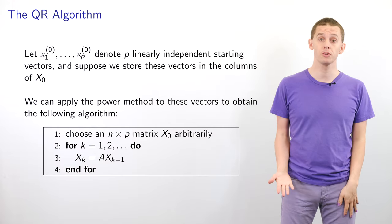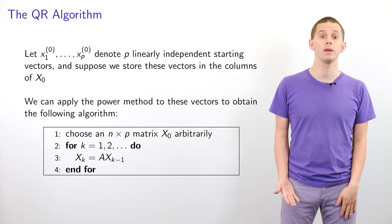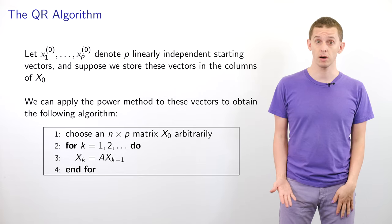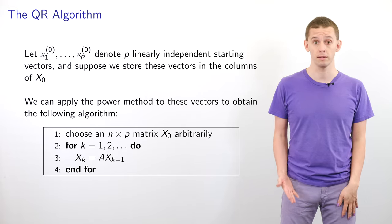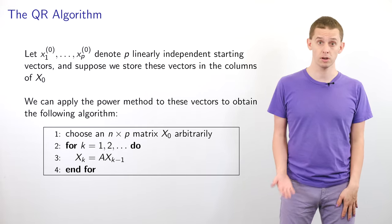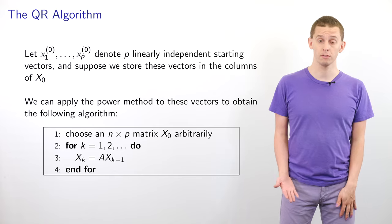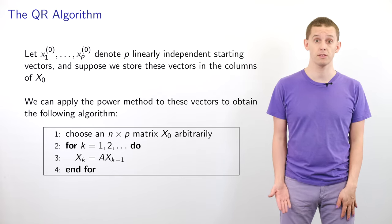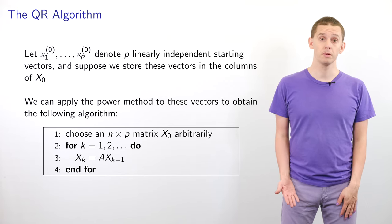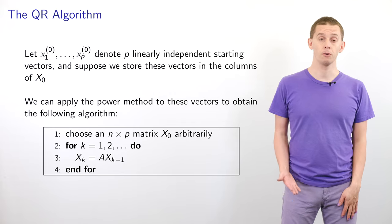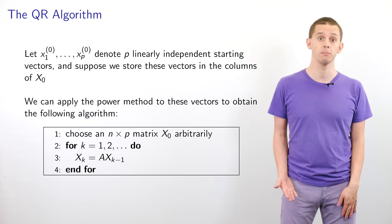Let A be a real symmetric n by n matrix. Let's choose x1 to xp to be p linearly independent random starting vectors for our power method. We'll use a superscript to indicate the iteration in the power method, so the starting vectors will have a superscript of 0. We can assemble these starting vectors into the columns of a matrix x0 that will be n by p. If we apply the power method then we'll end up with a simple algorithm: for k equal 1, 2 and so on we'll have xk is equal to A times xk minus 1.